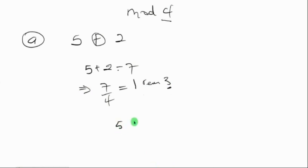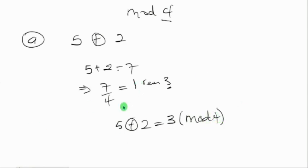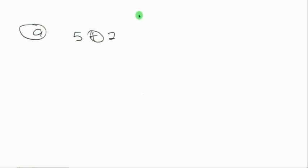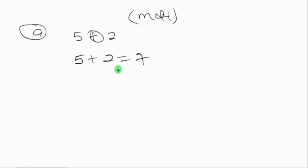So 5 plus 2 is equal to 3 in mod 4. Another method is solving in relation to the particular number. For 5 plus 2 in mod 4, we still add to get 7, but now instead of dividing by 4, we express 7 in a way that includes mod 4.